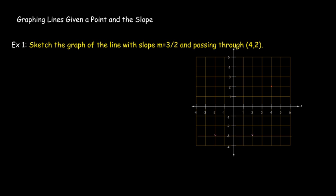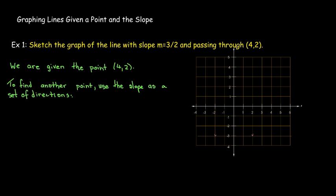Well, what I can do is starting from that point, so starting from 4, 2, I can use the slope as a set of directions telling me which way to go, how much up and how much to the left or right to get to another point on the line. And so if I think of m equals 3 over 2, remember that is my vertical change over the horizontal change. And so what I want to do is starting from that point, I want to go 3 up and 2 to the right.